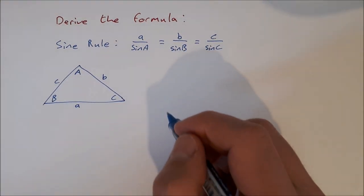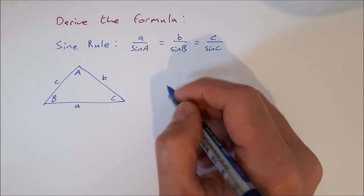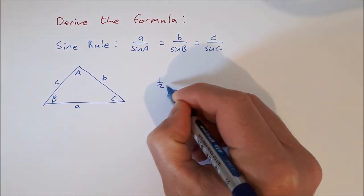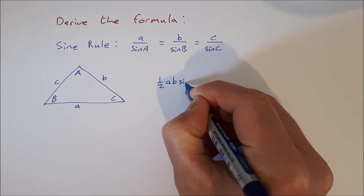We can use the area rule for a triangle, which is half ab sine C.